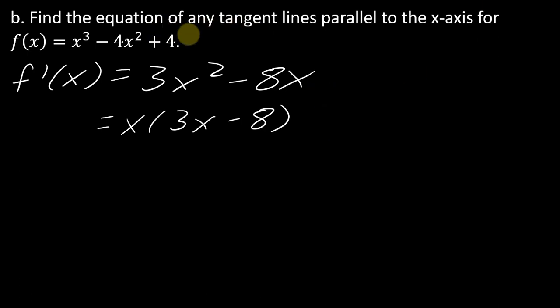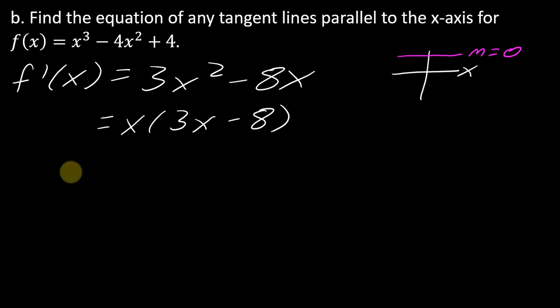We need to think about what we know about tangent lines parallel to the x-axis. A line parallel to the x-axis is a horizontal line, and what is the slope of a horizontal line? It's always zero. So a line parallel to the x-axis has a slope of zero — it's a question that sounds more difficult than it needs to be. Remember, the derivative is not the tangent line itself; it tells us how to find the slope of any tangent line. So to find tangent lines with slope zero, set the derivative equal to zero.